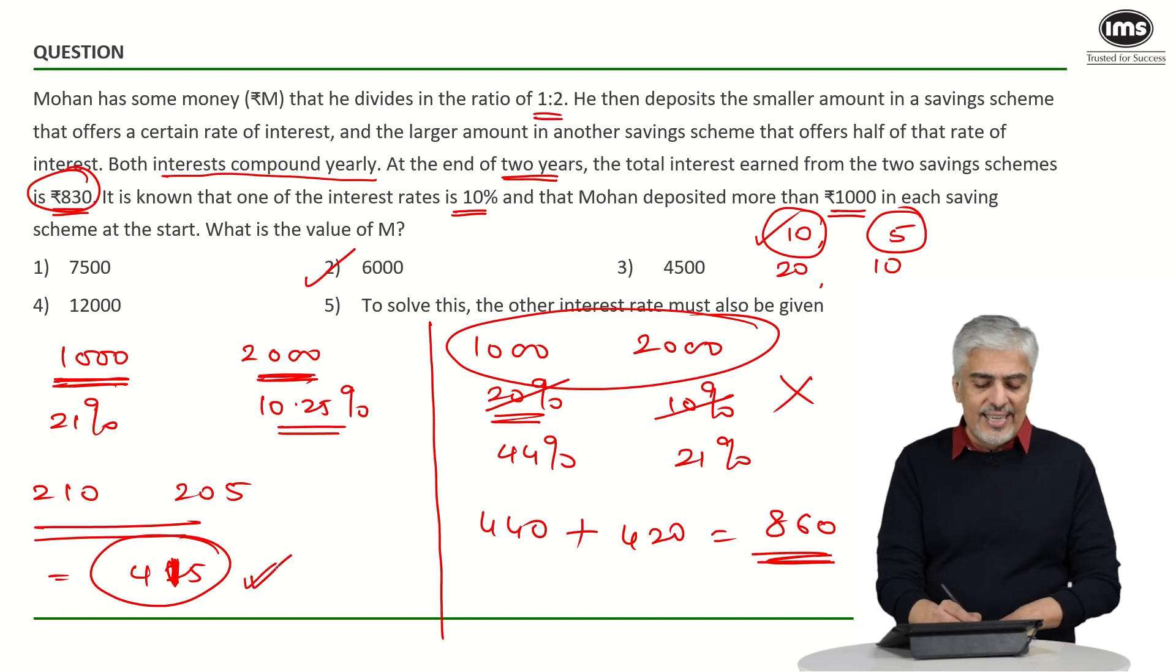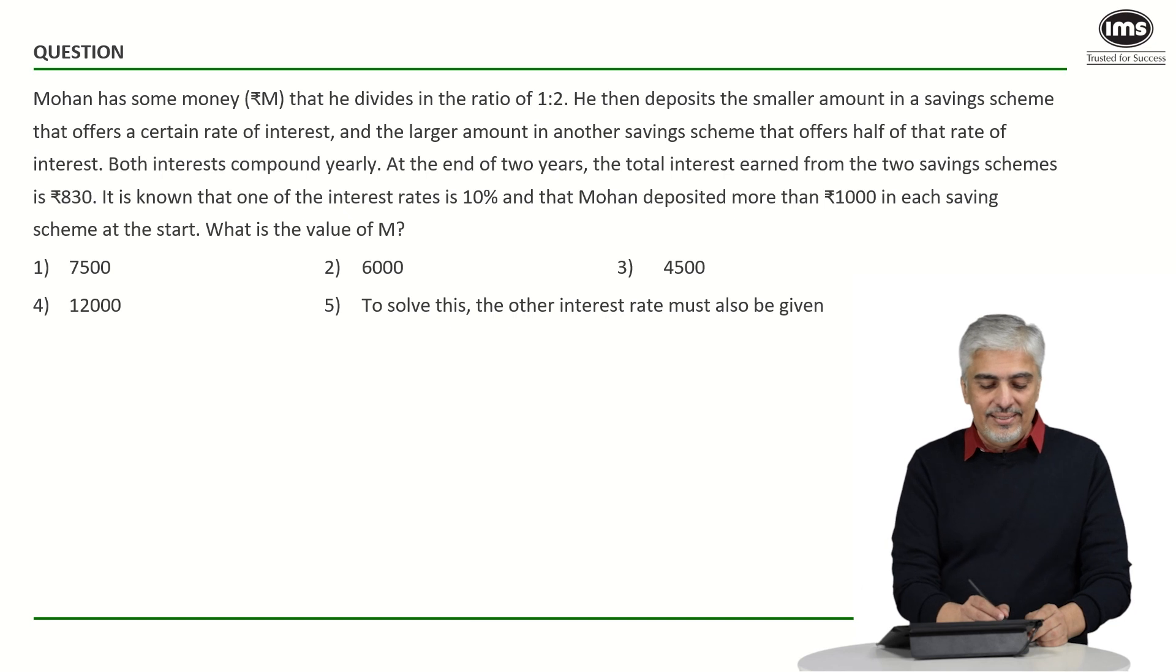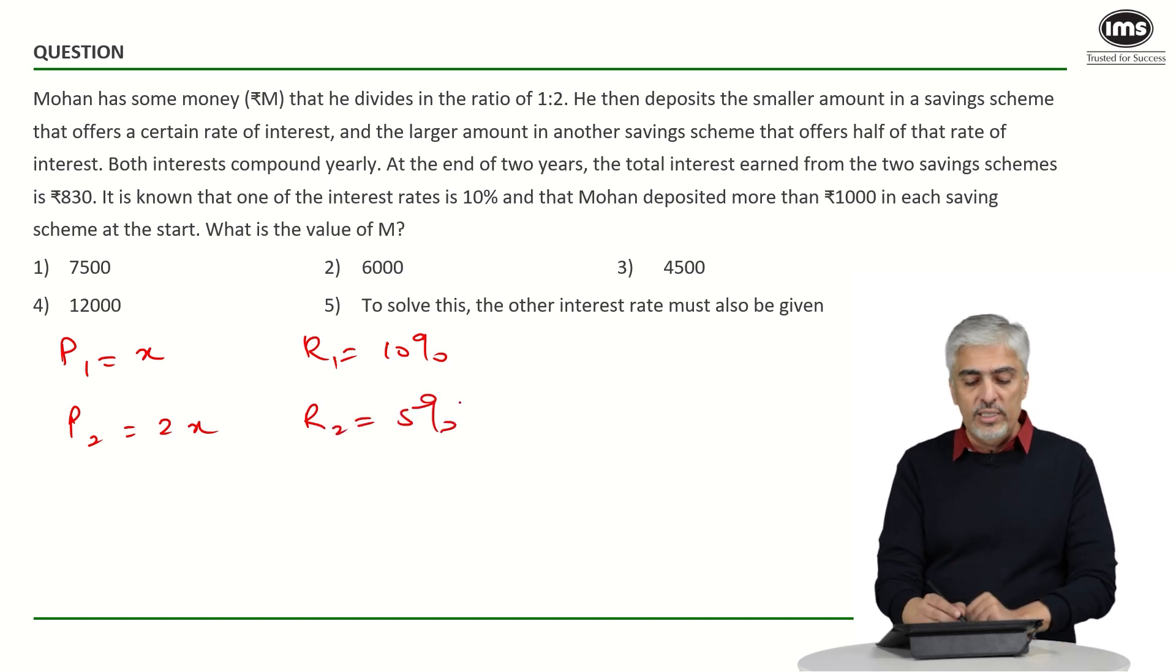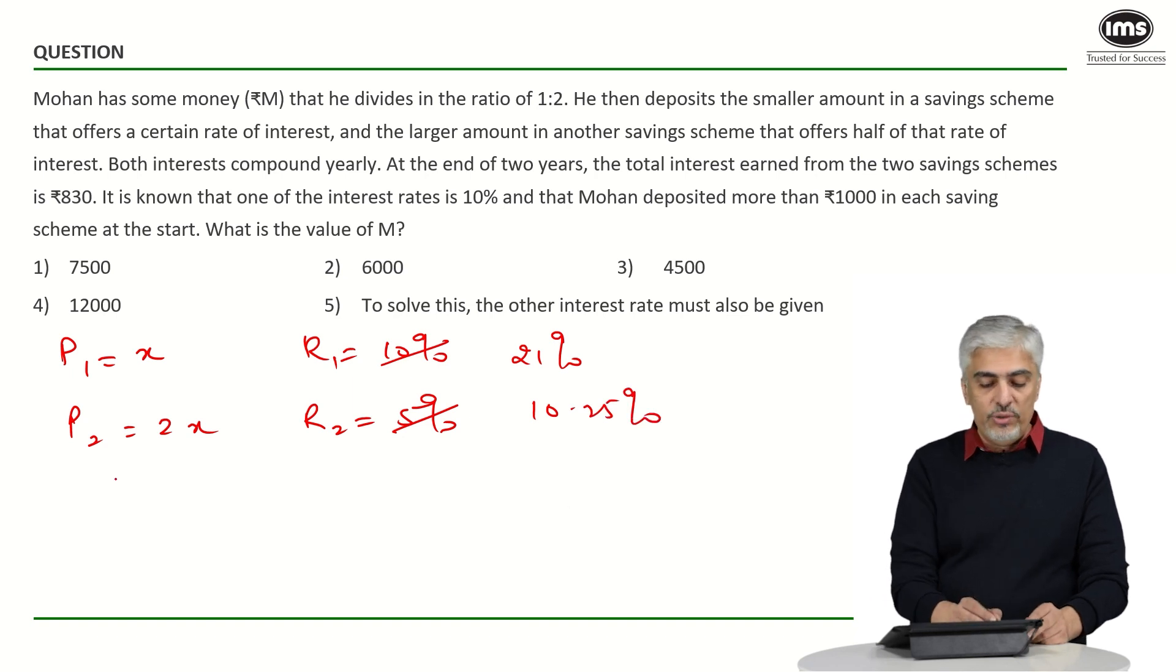So, students who did not understand this exactly half logic, what I can do is I can now explain to you using 10 that is 10 and 5%, how would you solve it using variables. So, let us try that. So, now what we will do is let us say the investment the principle for the first investment is x and second is 2x, here the rate is 10% while here the rate is 5%. Now, I know 10% for 2 years will become 21% compound interest using A plus B plus AB upon 100 while this will become 10.25%. So, you will have 21% of x plus 10.25% of 2x has to be 830 rupees.